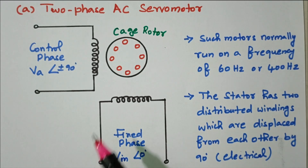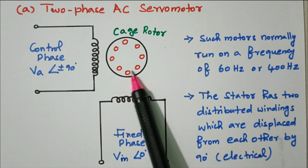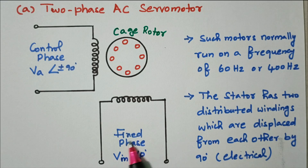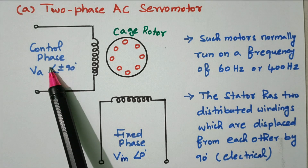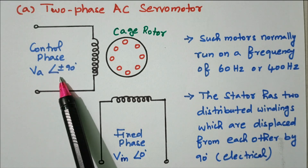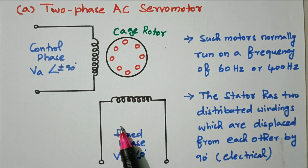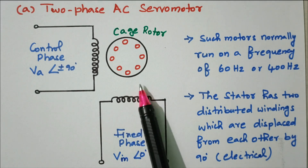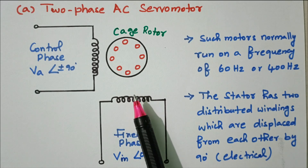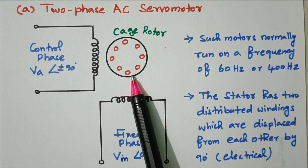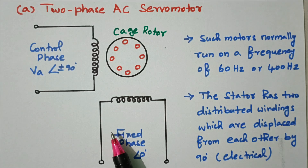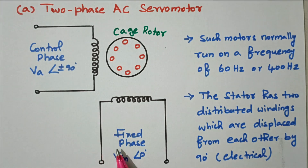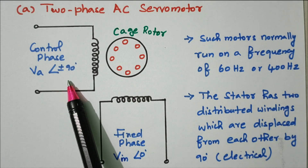This is a two-phase AC servo motor. The squirrel cage rotor is available; the bars are fixed and the coils are fixed. There are two phases: one is the fixed phase where Vm is the applied voltage at angle zero, and another is the control phase where the applied voltage Va is at plus or minus 90 degrees. The phase difference between fixed phase and control phase is 90 degrees. Any small change in current or voltage in the control phase will be reflected in the speed or position of the rotor — this is the main advantage of this servo motor.